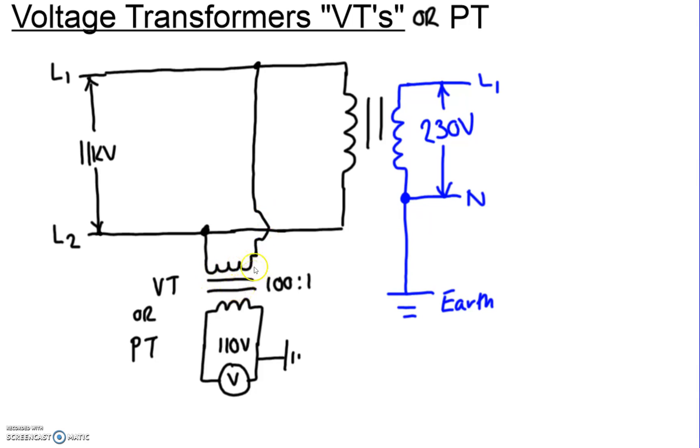So we want to measure the incoming voltage. But it's a little bit tricky when you've got 11 kilovolt because it's high voltage. The insulation needs to be bigger on the cables. The equipment needs to have higher voltage strength. So an easy solution to that is to use a voltage transformer.